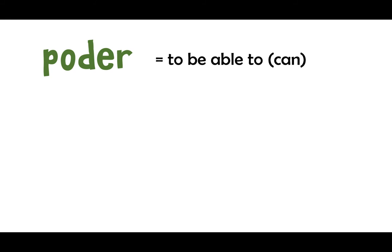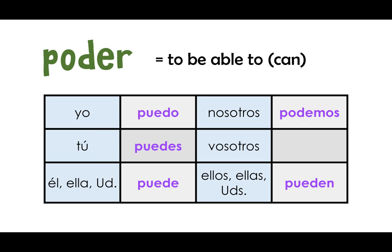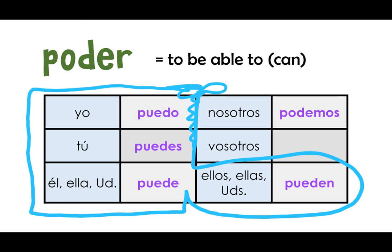Let's look at poder — to be able to. I hope you figured that out. If we back up and look at those sentences: Yo no puedo hablar — I can't talk on the phone. ¿Tú puedes nadar? — Are you able to swim? Mi amigo puede sacar — my friend can or is able to. Mi familia y yo podemos ir — my family and I can go on vacation. Juan y María pueden lavar los platos — Juan and María are able to. Good, I think it works. If we drew the footwear around it, we would notice that poder is changing everywhere except nosotros, where it has been kicked out.